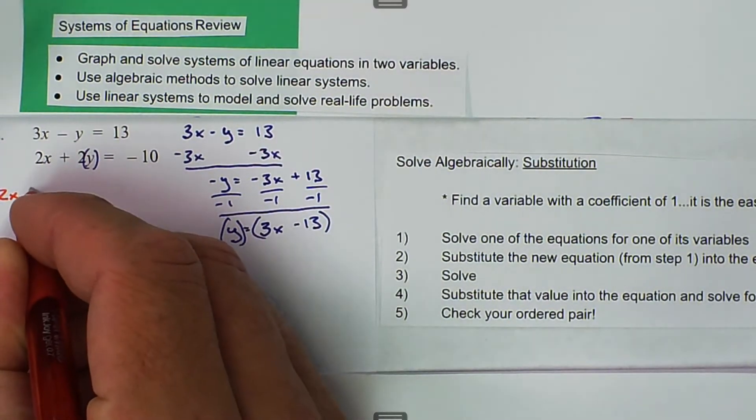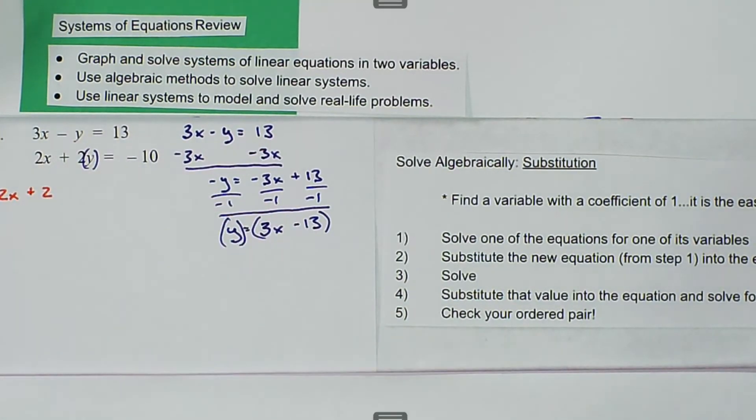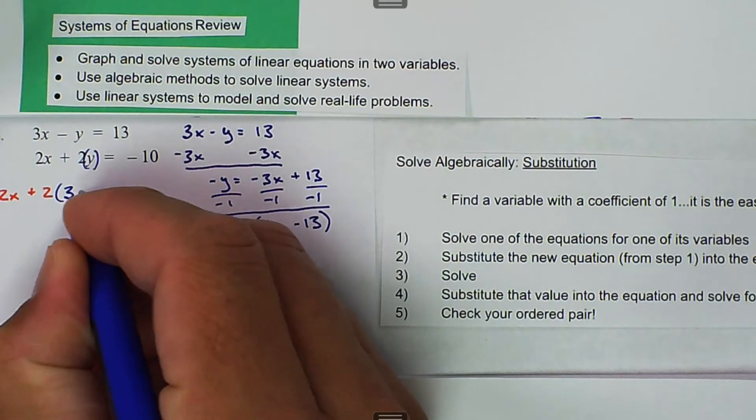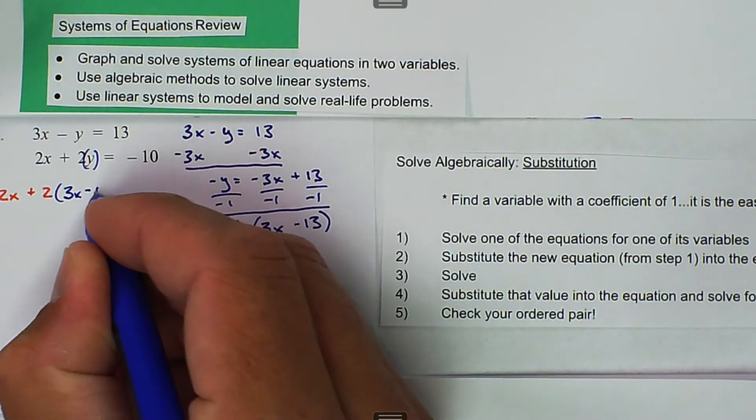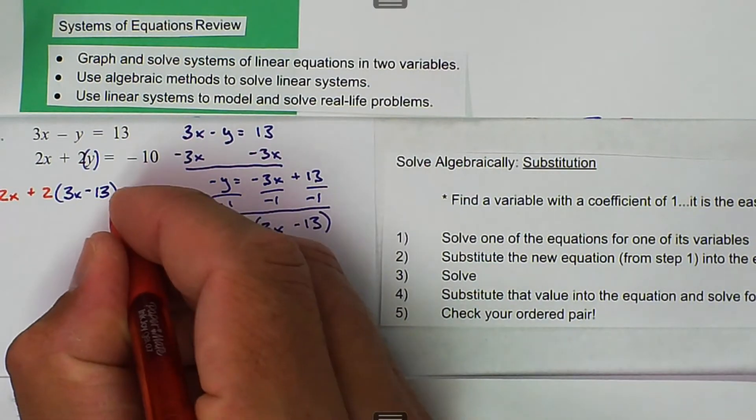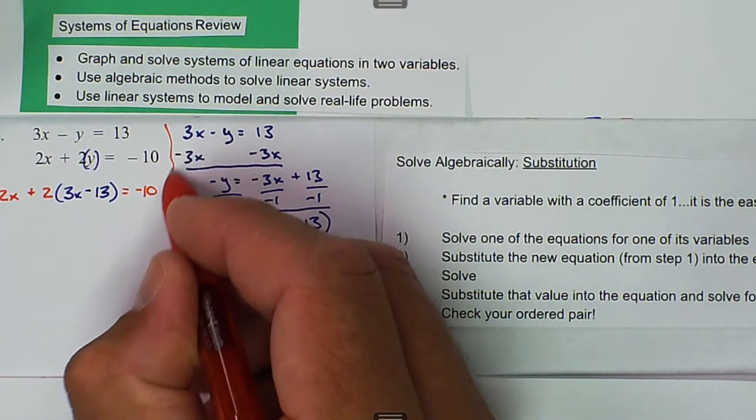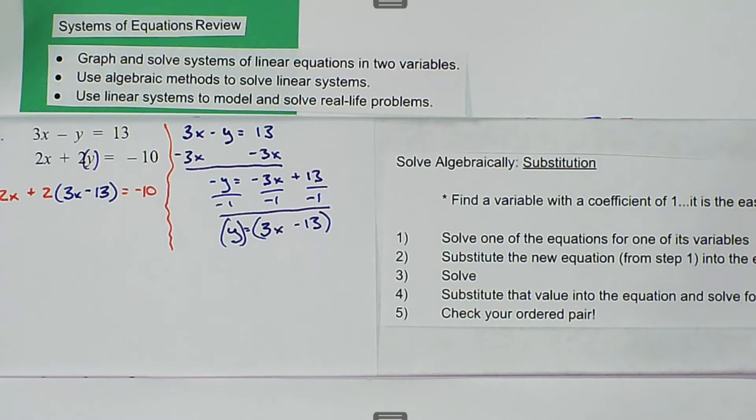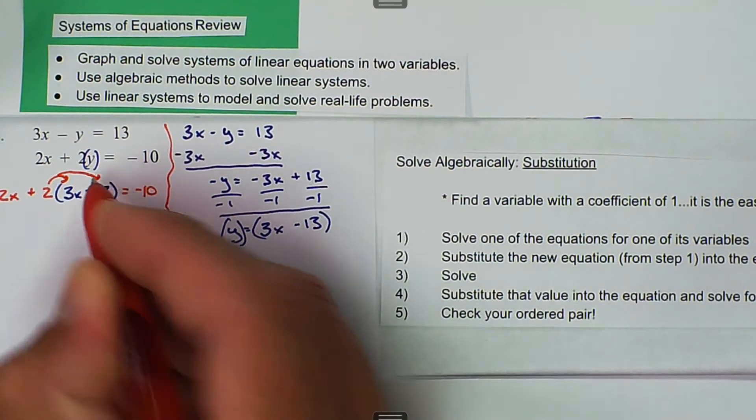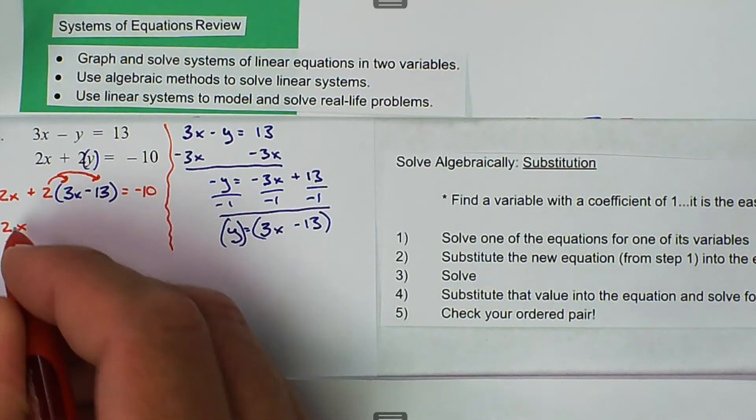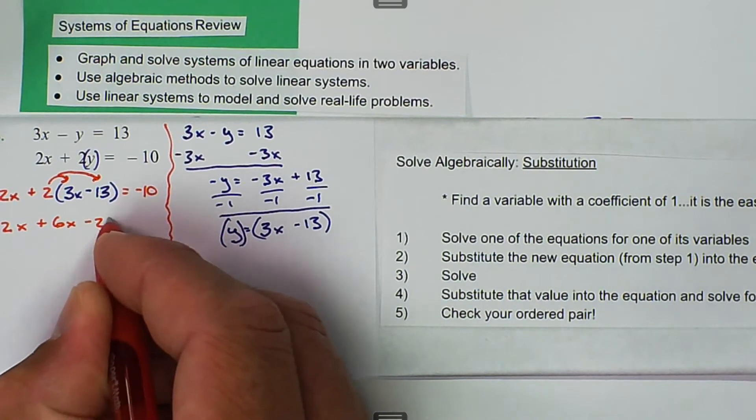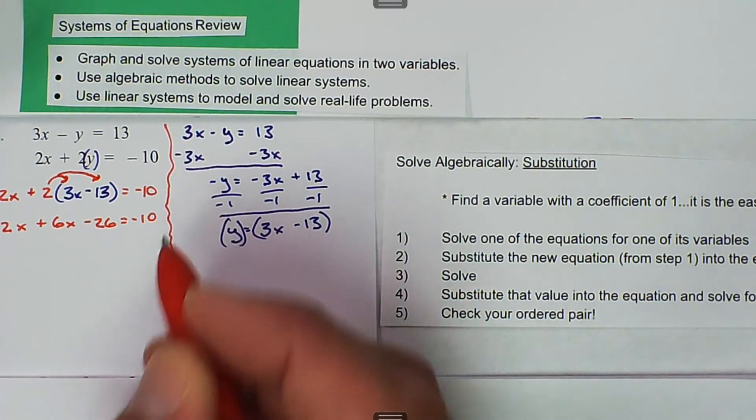So 2x plus 2, and then I'm going to write in the y in a different color, 3x minus 13, and that is equal to negative 10. First thing, I can distribute the 2 into the parentheses, so we get 2x plus 6x minus 26 is equal to negative 10.